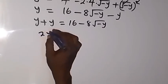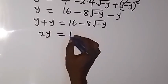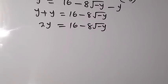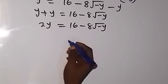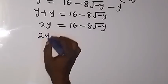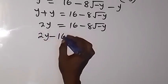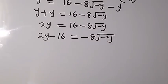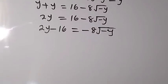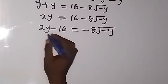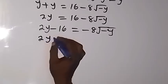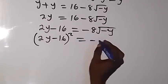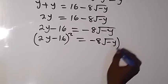So y plus y gives us 2y. Now we have 2y minus 16 equals to minus 8 root minus y. We separate 16 to this side, so we have 2y minus 16 equals to minus 8 root minus y, and let's square both sides again.